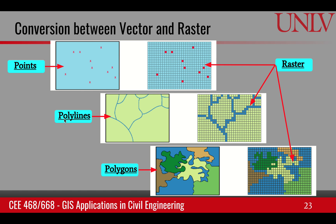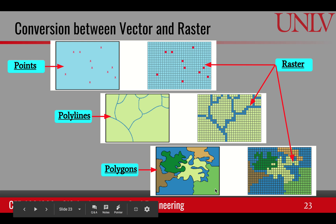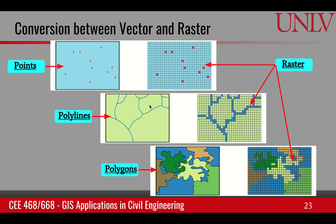Likewise, polylines can be rasterized — wherever there is a line, we have a value, and the background has a different value. Polygons have much utility in raster form too because they cover the whole area. And if we have raster, we can create polygons back; if we have raster lines, we can create the lines back. These are the methods available in GIS that help us take raster data to vector and vector to raster.